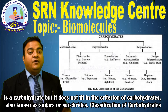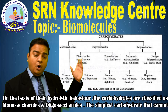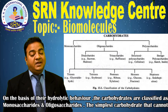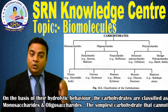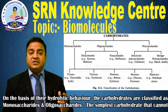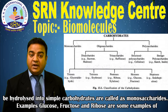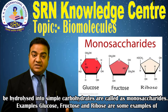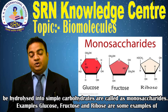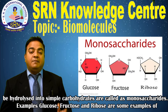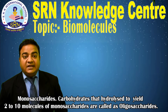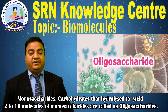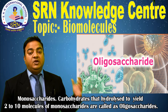Classification of Carbohydrates: On the basis of their hydrolytic behaviour, carbohydrates are classified as monosaccharides and oligosaccharides. The simplest carbohydrates that cannot be hydrolyzed into simpler carbohydrates are called monosaccharides — for example, glucose, fructose, and ribose. Carbohydrates that hydrolyze to yield 2 to 10 molecules of monosaccharides are called oligosaccharides.